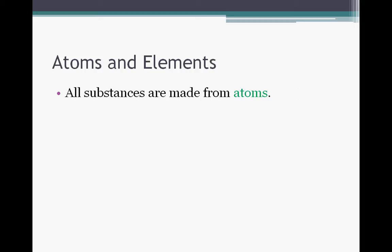Different objects are created by different atoms coming together in different ways to make different substances. But the smallest part of an element is an atom.